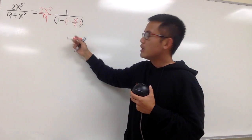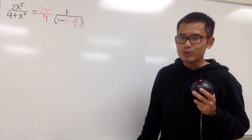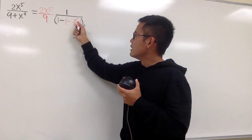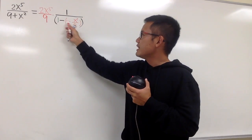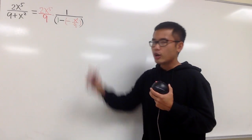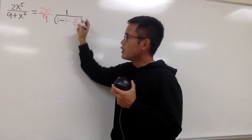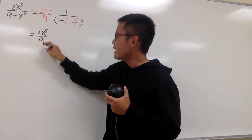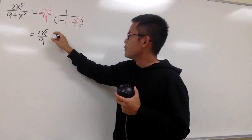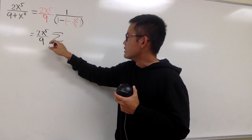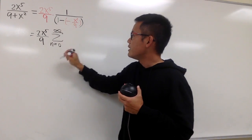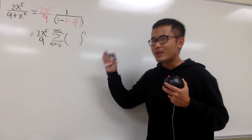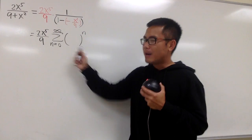This x squared over 9 is going to be our new input for the best friend. You can distribute the 9: 9 times 1 is 9, and 9 times x squared over 9 is x squared, and negative times negative gives us the plus. This is going to be the best friend part. For the best friend part, we can put that into summation notation: the series as n goes from 0 to infinity, with the input raised to the nth power — that's what the best friend tells us to do.